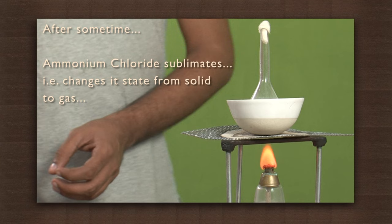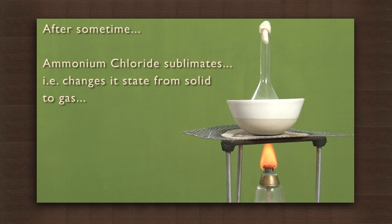After some time, the ammonium chloride sublimates — that is, changes its state directly from solid to gas. So it gets vaporized while chalk powder remains in the dish.